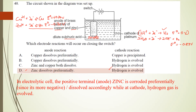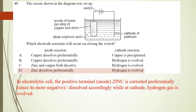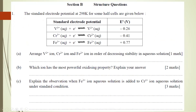Hopefully you understand better after the explanation. If you have questions, leave a comment below and I'll try my best to explain. So that is Section A. We continue immediately to Section B — structured questions. Number 1: standard electrode potentials at 298 K for some half-cells are given. Part A: arrange V2+, Cr2+, Fe2+ in order of decreasing stability.